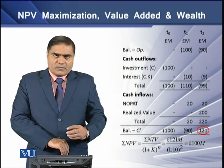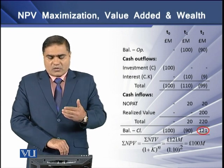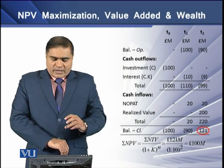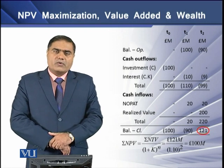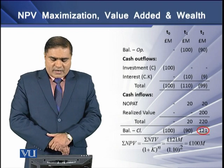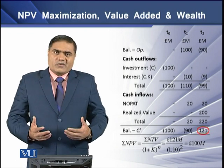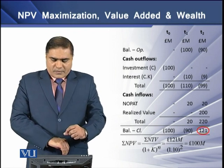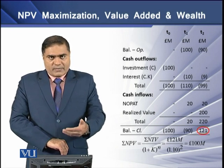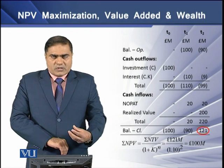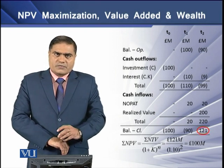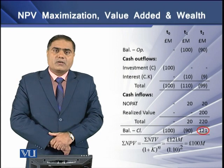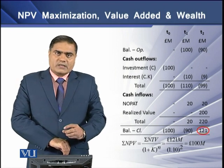The closing balance of 100 million at T0 becomes the opening balance at T1. During T1 we have one cash outflow in the form of interest expense and one cash inflow in the form of net operating profit after tax. Deducting interest expense from NOPAT gives a net inflow of 20 million. Adding this positive 20 million to the negative 100 million opening balance gives a closing balance of negative 90 million pounds.